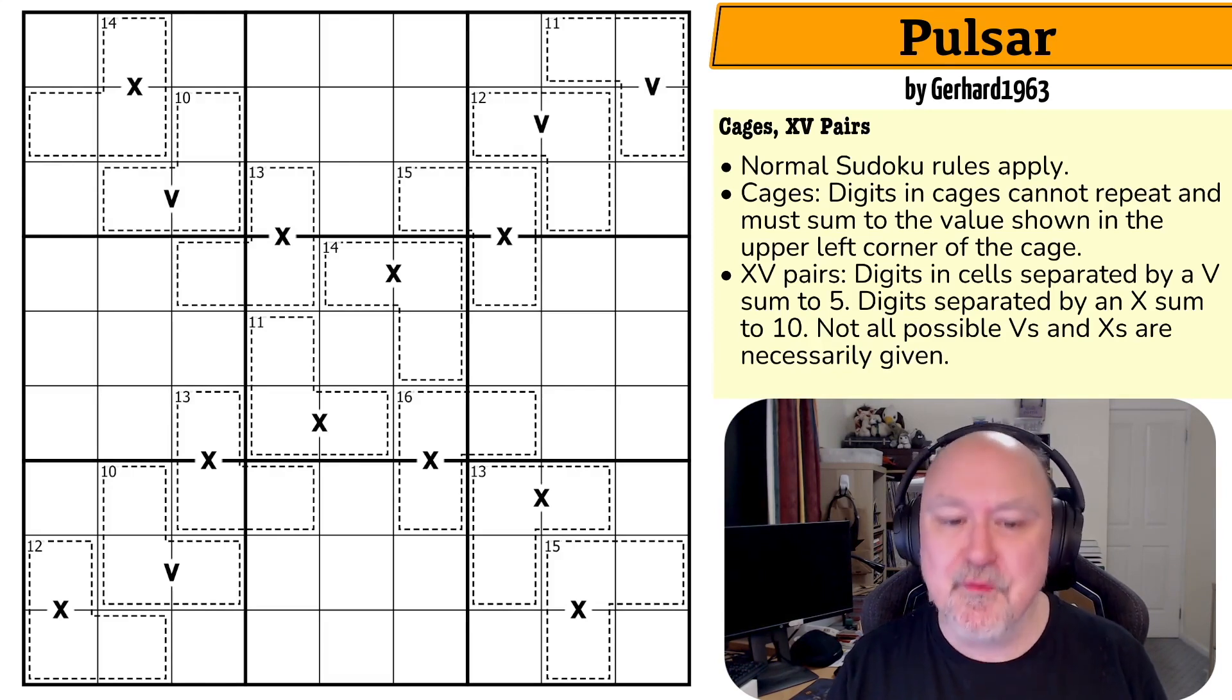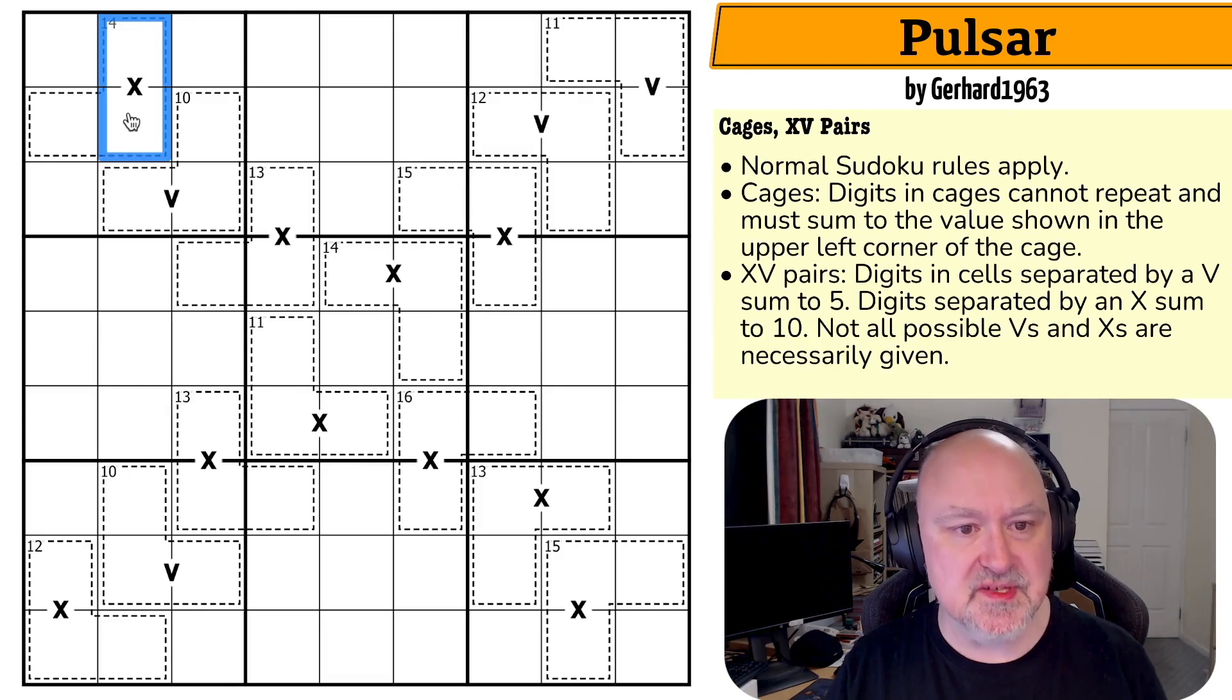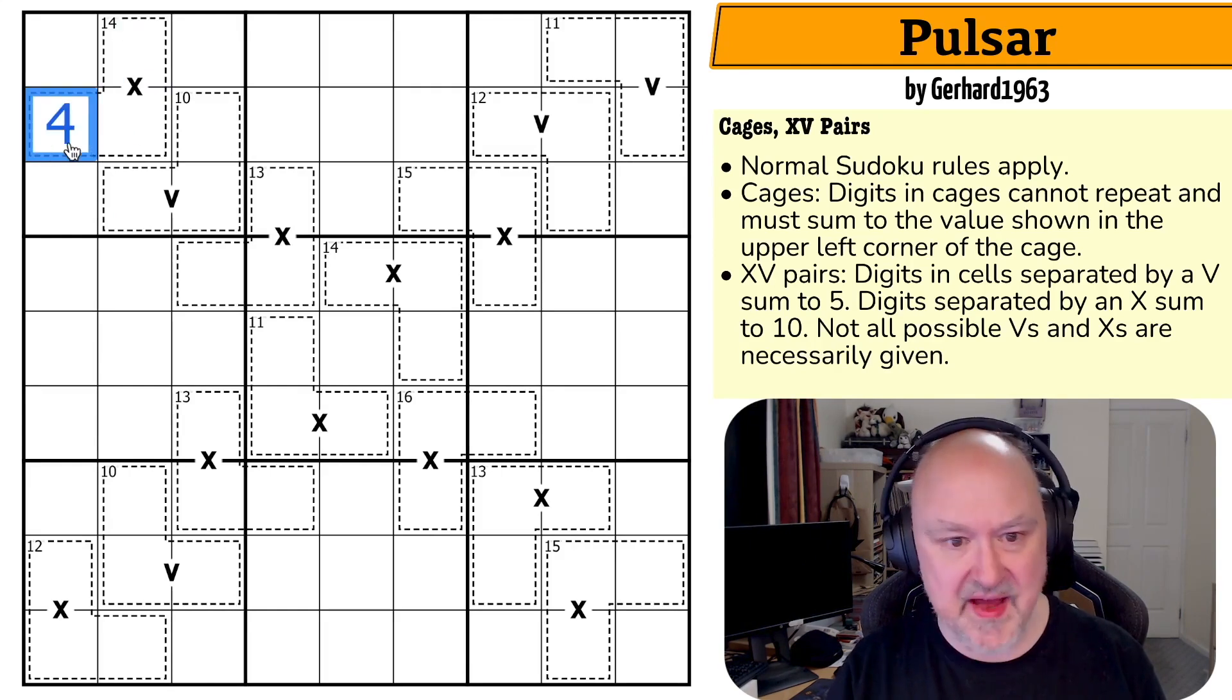There are some very immediate things that jump out at you. These two cells sum to 10, but those three cells sum to 14, so 14 minus 10, that is a four. And we can repeat this on all of these cages. Five, 10 minus five is five. 13 minus 10 is three.